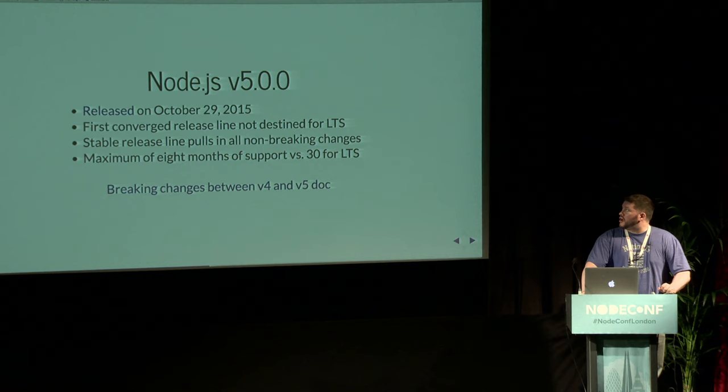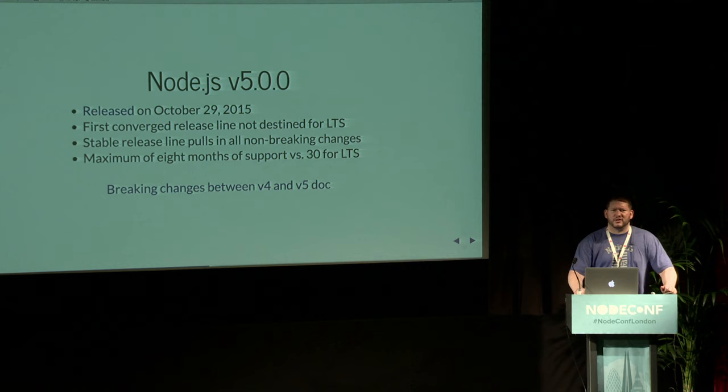Then in October, Node V5 was released. At the beginning of the LTS policy, everything was really rushed — it was supposed to be every six months but it was one month. This was the first one designed not to go into LTS; it was just going to be the current branch. It pulls in all the non-breaking changes — things like SemVer minor new features — so people can play with them and still get that io.js feel. This is only going to be supported for a maximum of eight months, as compared to 30 for LTS.